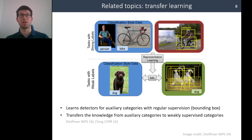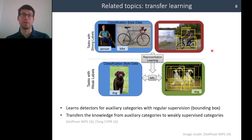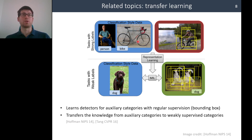Another realistic case is when we have images labeled with regular annotations — in this case, bounding boxes for object detection — but only for some categories. For example, we may have bounding boxes for the 'person' and 'bike' categories.